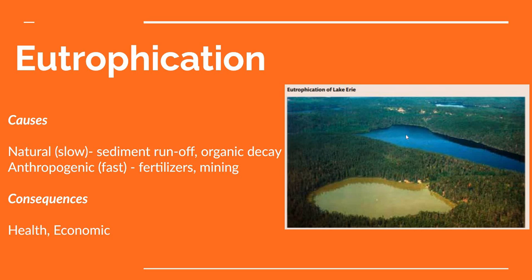Here you can see eutrophication of a lake right next to one which is still clean — what a difference. This lake is actually dying because you have too much growth. When hiking, you might come across a small lake that looks so green you could almost walk across it. That's eutrophication — it's actually dying, and eventually that lake will disappear. There'll be no water left, just biomass and organic matter.